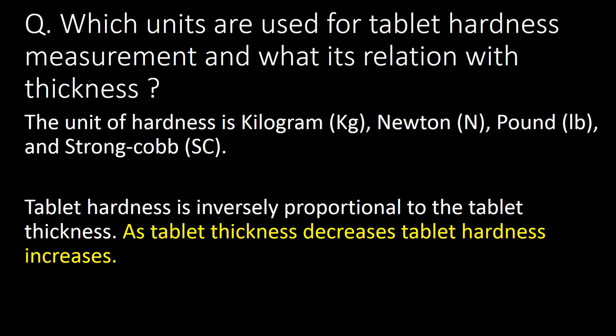Which units are used for tablet hardness measurement and what is its relation with thickness? The units of hardness are kilogram, Newton, and pound (Strong Cobb). Tablet hardness is inversely proportional to tablet thickness — as tablet thickness decreases, tablet hardness goes on increasing.